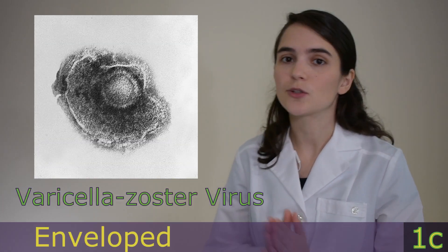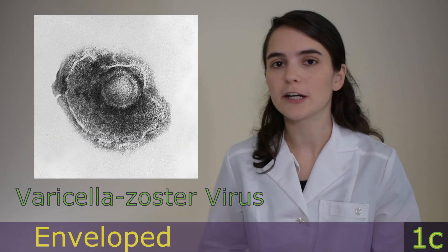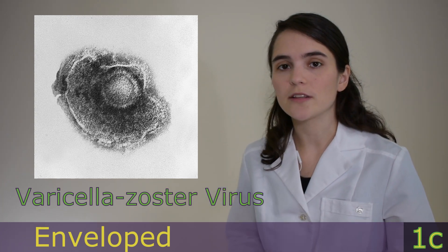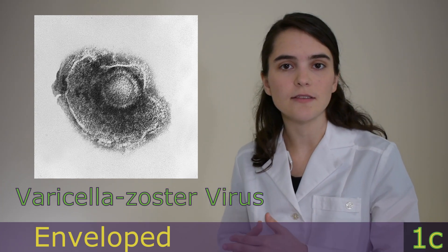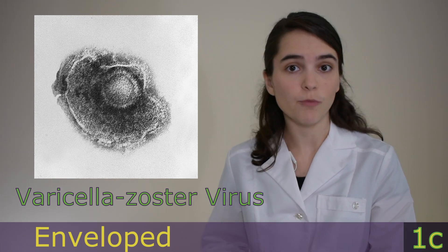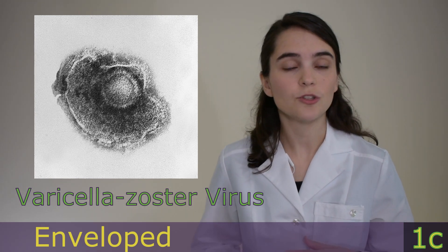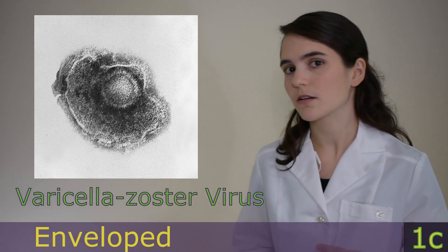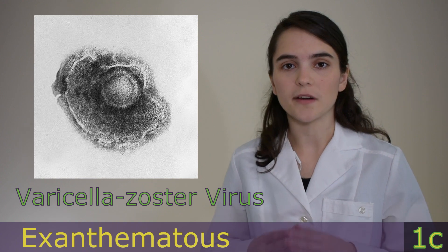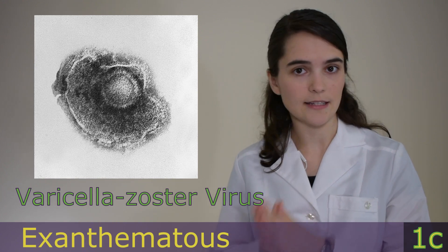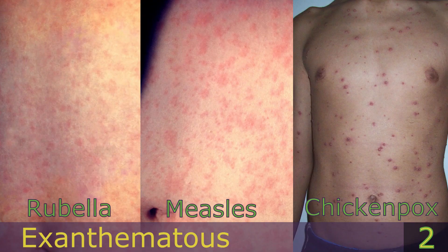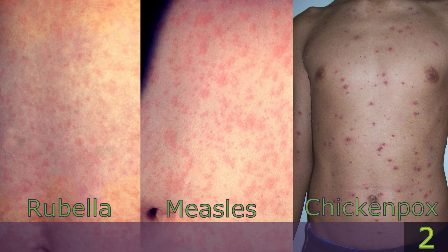The last group is enveloped — the ones whose capsids are enveloped in membranes. For example, the varicella zoster virus, which causes chickenpox, which is a rash disease, or exanthematous disease. So are rubella and measles. All three are contagious and have similar symptoms, and there are vaccines developed to fight against them. The easiest way to tell the difference between the three is by the way they look.